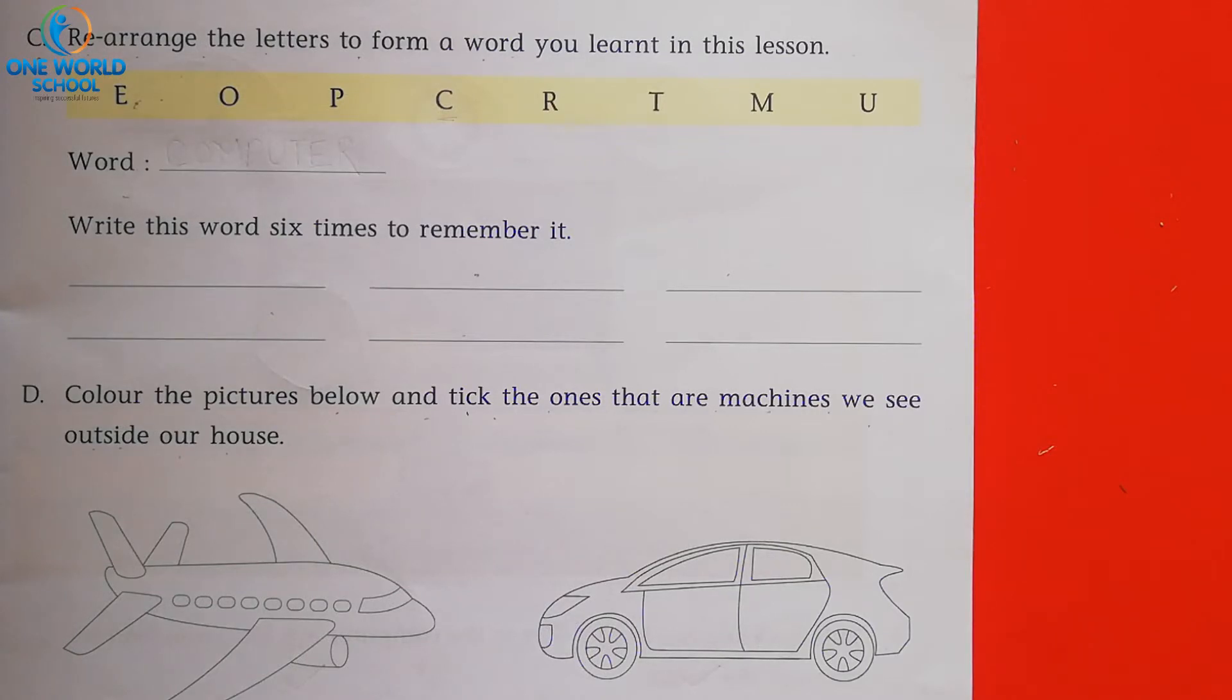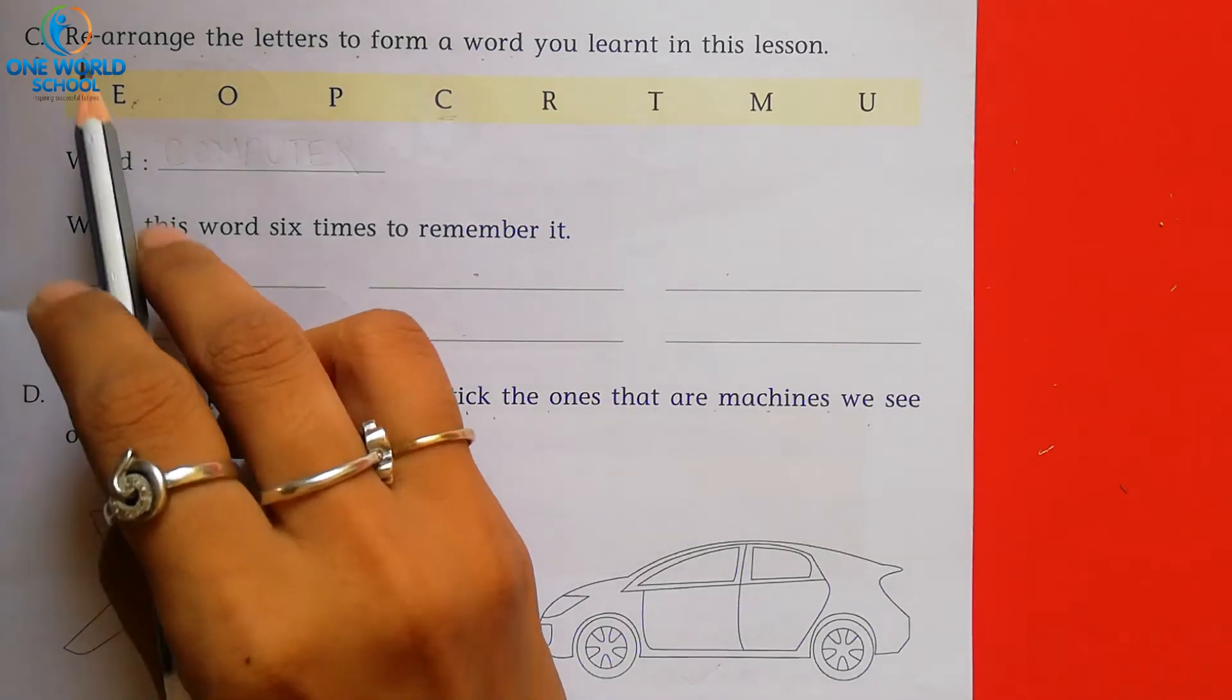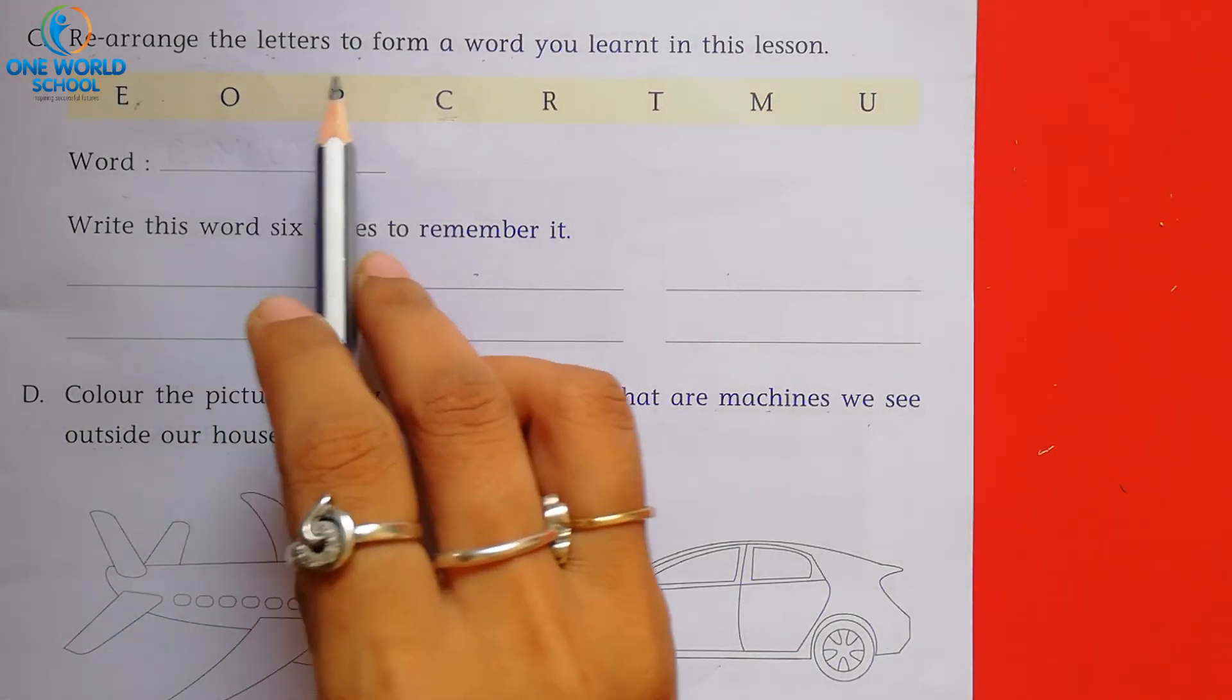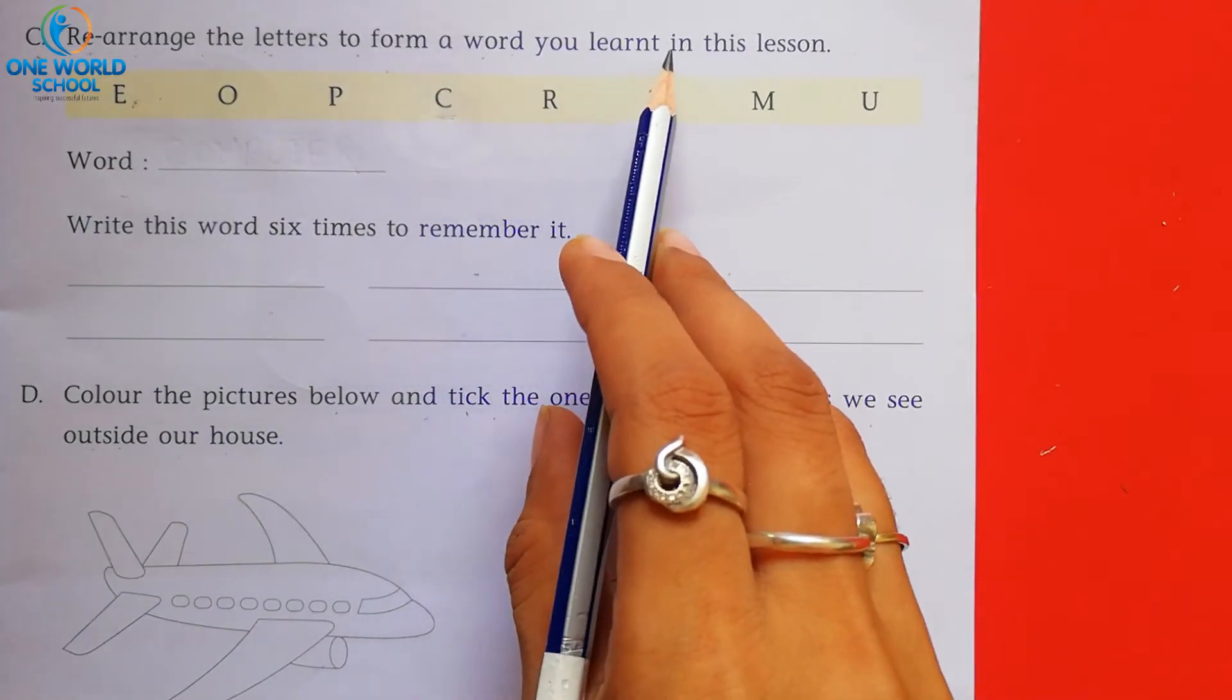Question number C. Come on the page number 7 and take out your pencil. What are the question number C? Rearrange the letters to form a word you learn in the lesson.